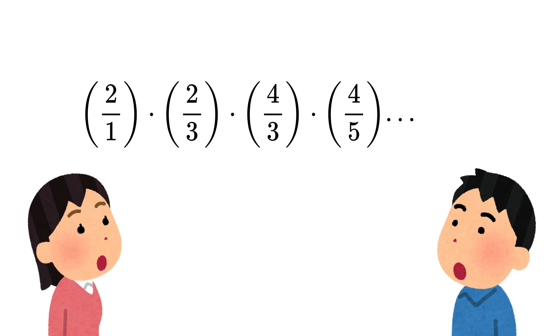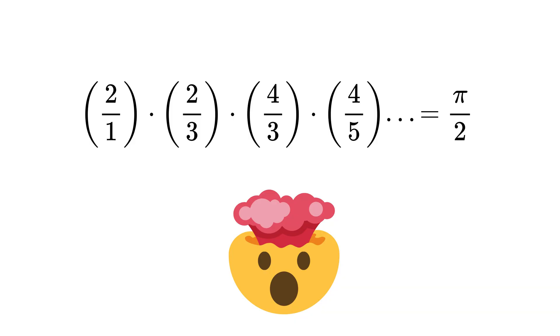What you are now looking at is not just random fractions, but it is a special chain of ratios that step by step is getting closer and closer to one of the most magical numbers in all of math: pi divided by 2.